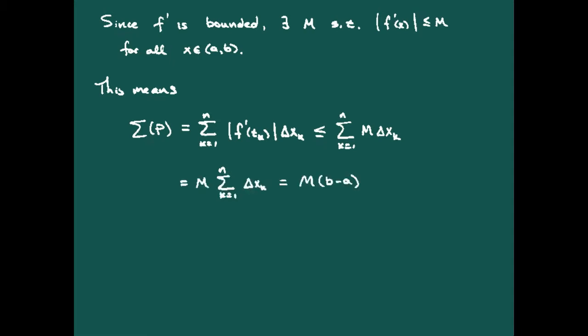For an arbitrary partition, that quantity is bounded above by M(b − a), and that's enough to tell us that f is indeed of bounded variation on [a, b].